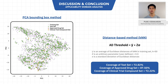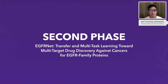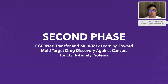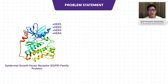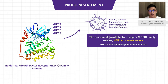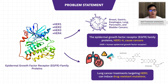And this is the end of the first phase. For the second phase, we enlarge our scope from EGFR or HER1 protein to all EGFR family proteins, including HER1, 2, 3, and 4, and also HER1 mutant protein. EGFR family proteins are the causes of many cancers, such as breast, gastric, esophagus, lung, pancreatic, and bladder cancers. Besides, we include HER1 mutant because the current lung cancer drugs targeting wild-type HER1 can lead to drug-resistant mutations.